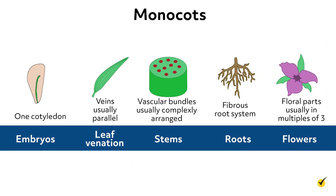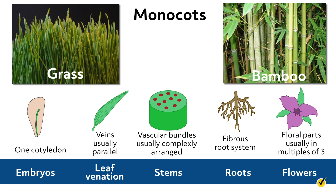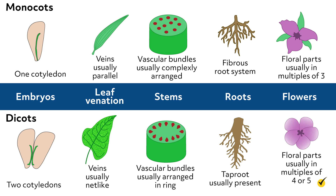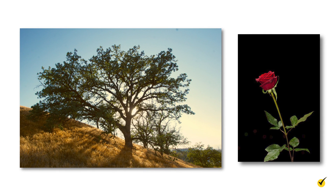Monocots get their name from having only one cotyledon, a specific part of the seed that grows leaves. They have long narrow leaves with parallel veins and flowers with petals that are in groups of three or multiples of three. Their roots form a network of fibrous roots that all arise from the stem of the plant. Grass and bamboo are both examples of monocots. Dicots get their name from having two cotyledons rather than one. They have oval-shaped leaves with net-like veins and petals in groups of four or five. They have one main root called the taproot with smaller roots branching off of it. Oak trees and roses are both examples of dicots.